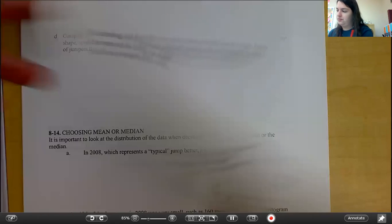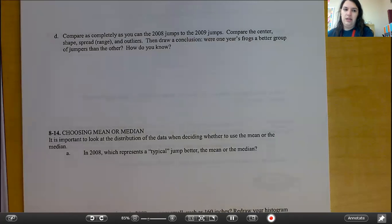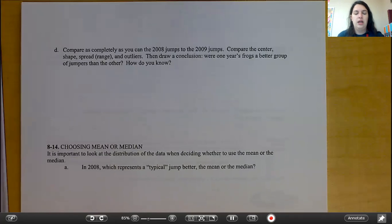Finally, one more part. Part D, compare as completely as you can the 2008 jumps to the 2009 jumps. Compare the center, shape, spread, range, and outliers. Then, draw conclusions. Were one year's frogs a better group of jumpers than the other? How do you know? Go ahead and make your conclusion.